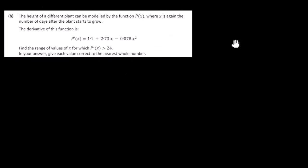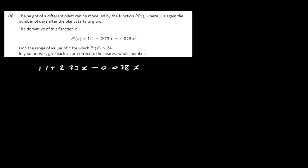Let's have a look at part B. The height of a different plant can be modelled by the function P of X, where X is the number of days after the plant starts to grow. The derivative of the function is P prime of X equals 1.1 plus 2.73X minus 0.078X squared. We want this to be greater than 24, giving our answer correct to the nearest whole number.